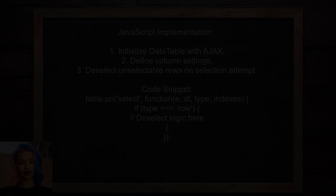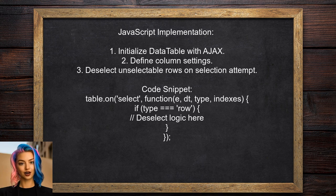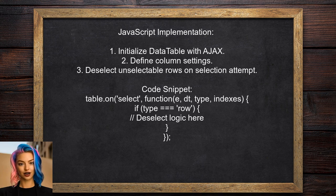In the JavaScript code, the user initializes the data table and sets up the column definitions. They also handle the selection behavior by deselecting any rows that are marked as unselectable when a user tries to select them.